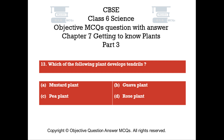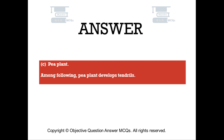The right answer is Option C: Pea plant. Among the following, the pea plant develops tendrils.